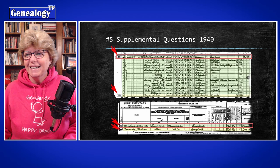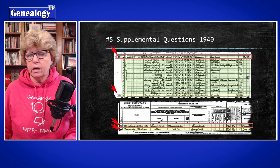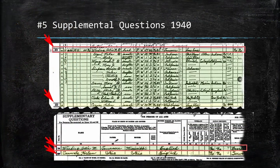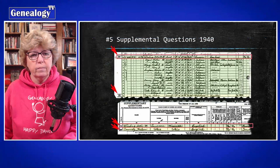Tip number five is about those supplemental questions. This is an example of the 1940 census — there were two lines, line 14 and line 29. If you happen to have an ancestor who fell on one of those lines, there was more information at the bottom of the page, which for me has been wildly helpful in providing additional information. In the 1940 census, those two supplemental lines also ask where the father and mother were born, which can be very helpful.